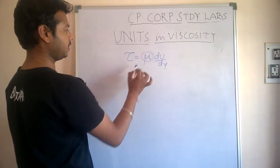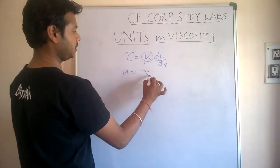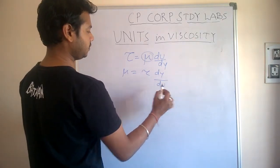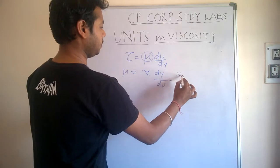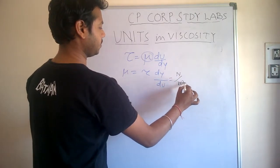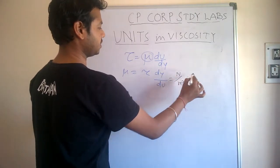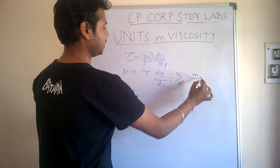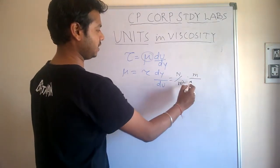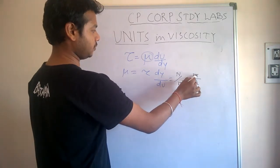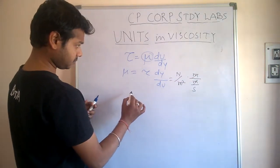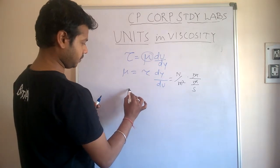So from here, μ equals τ dy by du. Its units are τ newton per meter square, dy was a length so meter, du velocity meter per second. So meter meter will be cancelled out.